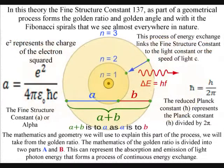The mathematics of the golden ratio is divided into two parts, a and b. This can represent the absorption and emission of light photon energy that forms a process of continuous energy exchange.